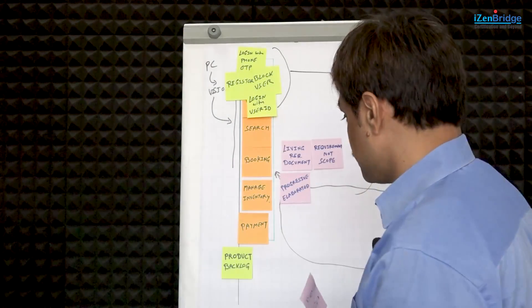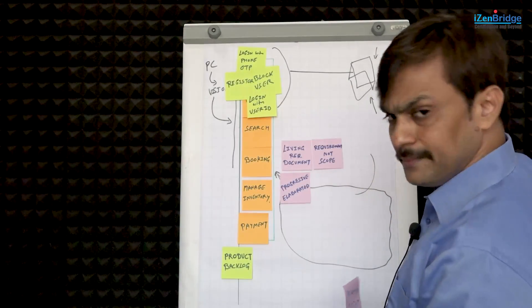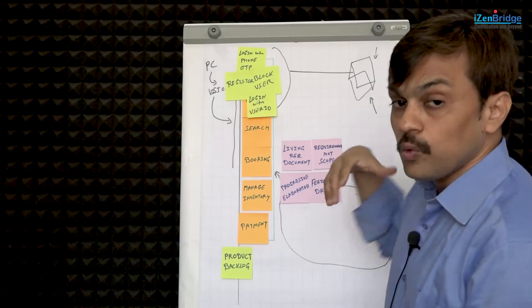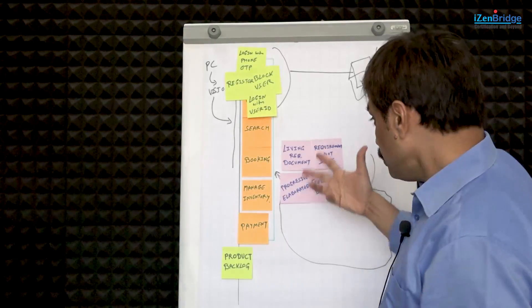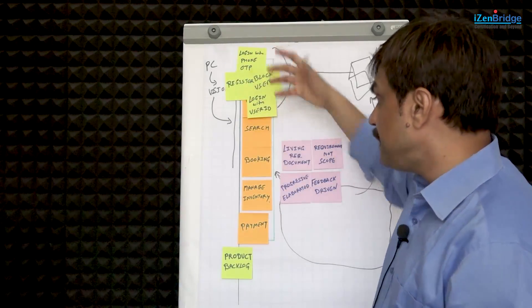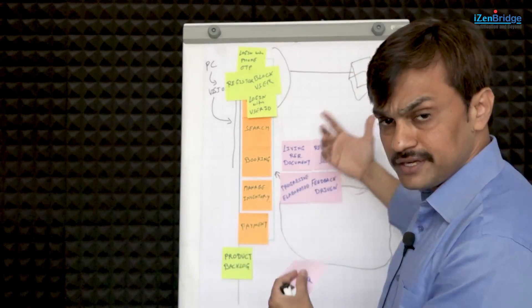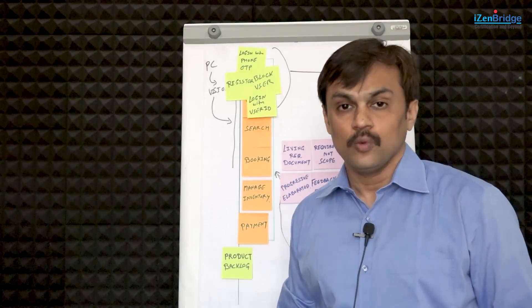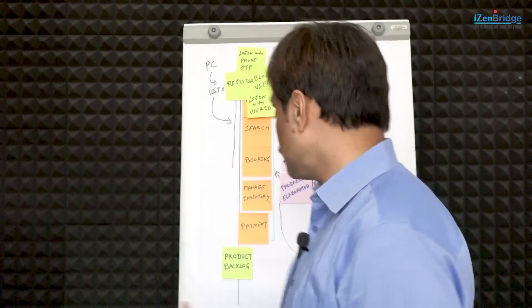There are two elements to progressive elaboration. First, we are not elaborating everything at the beginning — we want to do it gradually and learn more, then implement. Second, that elaboration should be based on what we learn from stakeholders after giving them a piece. If I don't know how they'll respond to user registration, I shouldn't create an elaborated requirement for search yet. Once I have feedback, then I can elaborate what's needed in the search space.